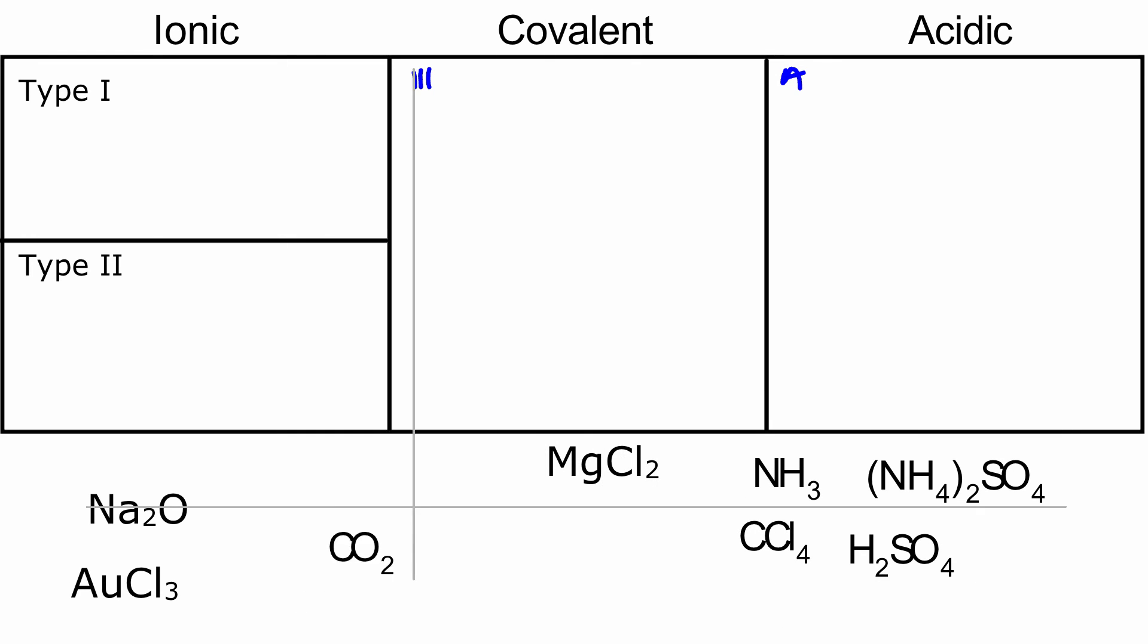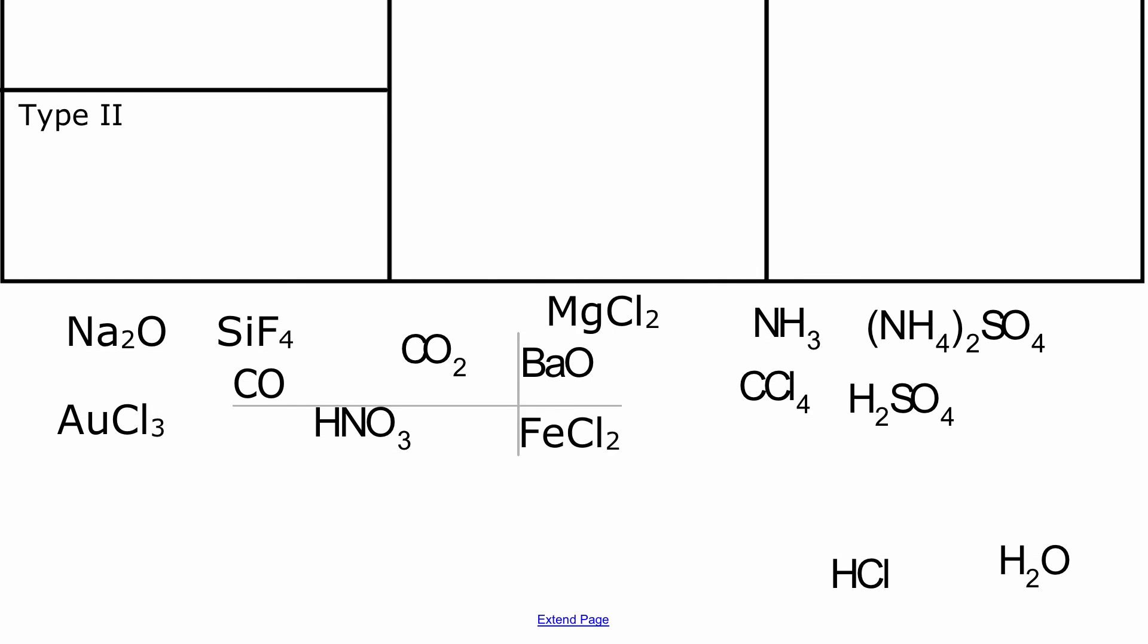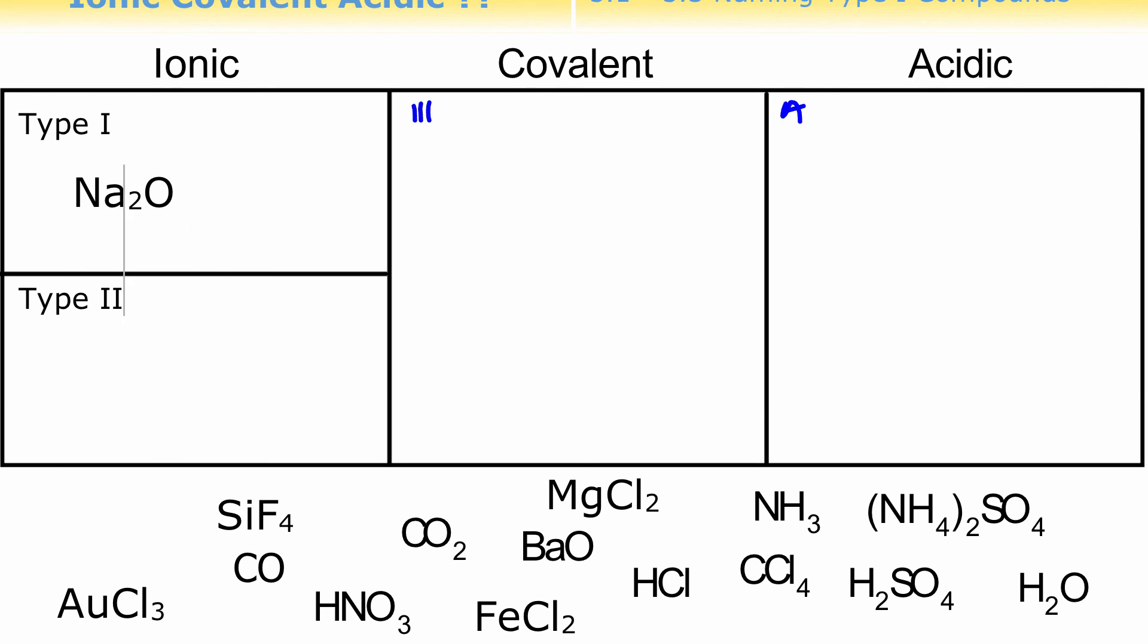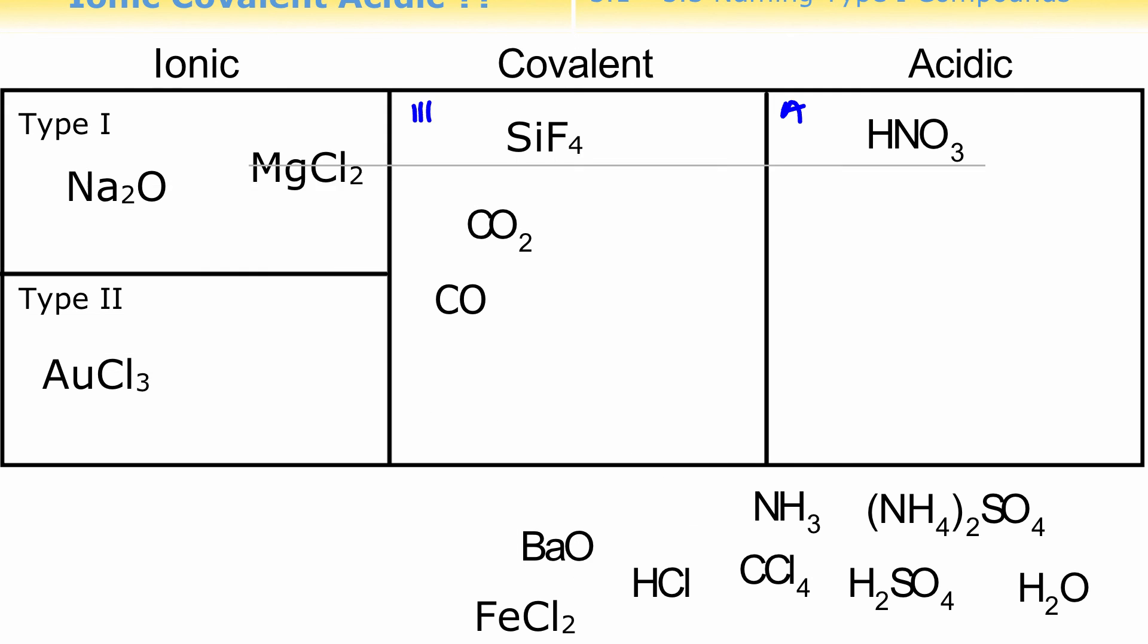Okay, hopefully you paused and you tried some of these. So Na2O, that's a type 1 compound. SiF4, they're both non-metals, so that would be covalent. Both non-metals, both non-metals. Gold chloride, gold has two charges, so it would be a type 2-er. HNO3, that's got a hydrogen in it, and nitrate, so that's an acid, nitric acid. Magnesium chloride, be a type 1-er, same with barium oxide. Iron chloride, iron's got two charges, so it's down here. Metal and a non-metal, but the metal has two charges. So it's a hydrochloric acid, be there.